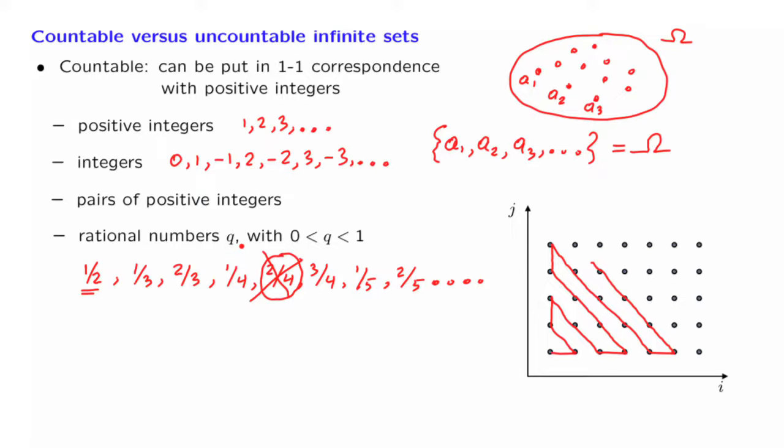So what kind of set would be uncountable? An uncountable set, by definition, is a set that is not countable. And there are examples of uncountable sets. Most prominent, continuous subsets of the real line. Whenever we have an interval, the unit interval, or any other interval that has positive length, that interval is an uncountable set.